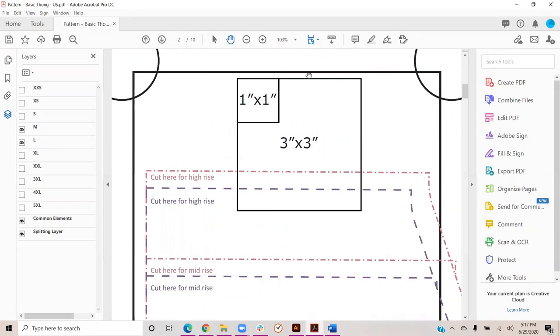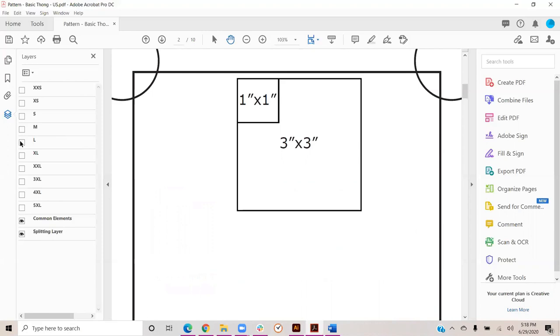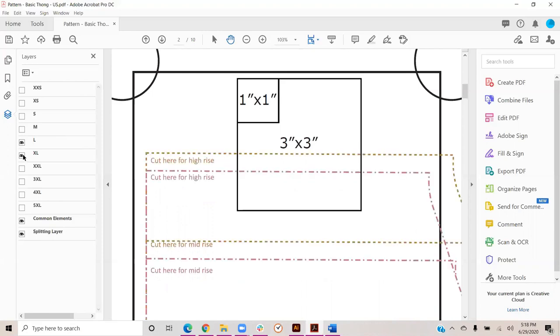This is page two of our patterns, and you can see here we have a one inch square and a three inch square. It's super important that you print just page two first. You can do that with just those squares if you want, or it can have your pattern sizes on it. Then just make sure that those squares are printing to scale.